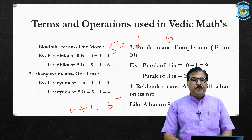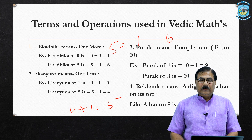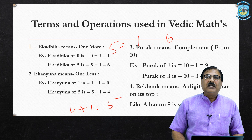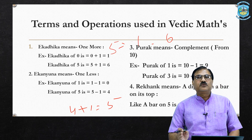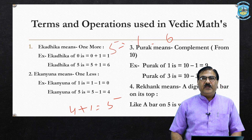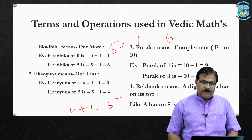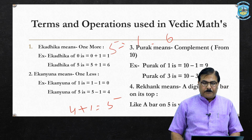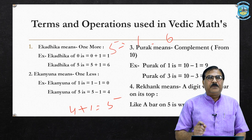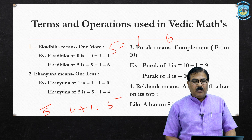The third term is Puraq, meaning 'complement from ten.' If someone asks what is the Puraq of one, that is nine (ten minus one equals nine). What is the Puraq of three? Ten minus three equals seven, so Puraq of three equals seven. Rekhank means a digit with a bar on its top — it denotes a negative number. For example, write five and put a bar at the top — that is called Rekhank.